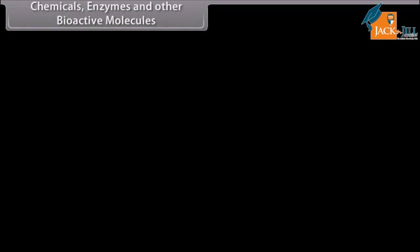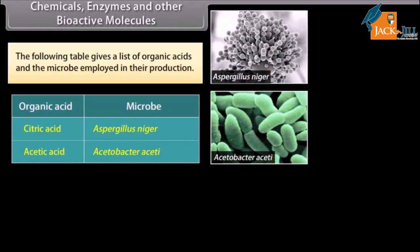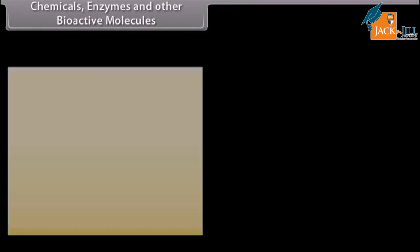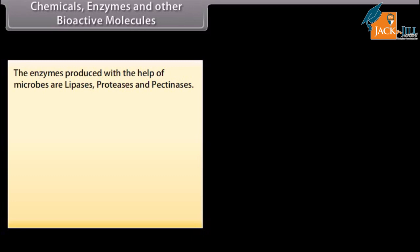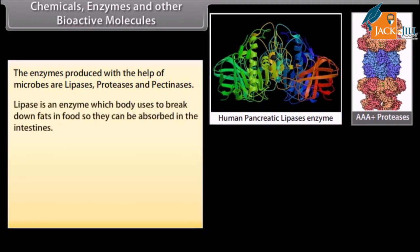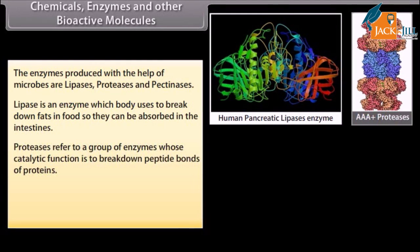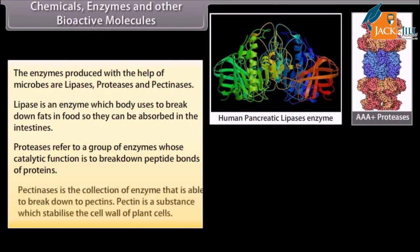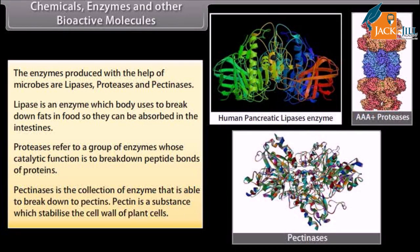Chemicals, enzymes and other bioactive molecules. The following table gives a list of organic acids and the microbe employed in their production. The enzymes produced with the help of microbes are lipases, proteases and pectinases. Lipase is an enzyme the body uses to break down fats in food so they can be absorbed in the intestines. Proteases refer to a group of enzymes whose catalytic function is to break down peptide bonds of proteins. Pectinase is a collection of enzymes able to break down pectins — the substance which stabilizes the cell wall of plant cells.